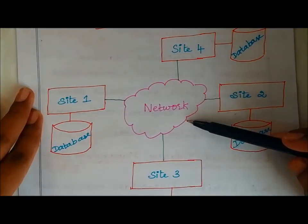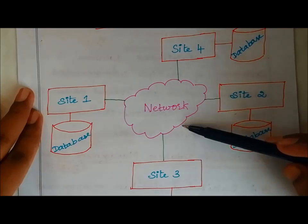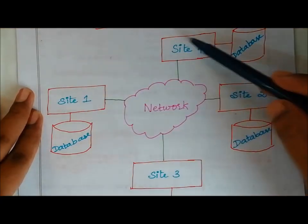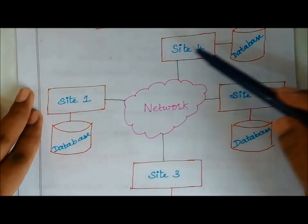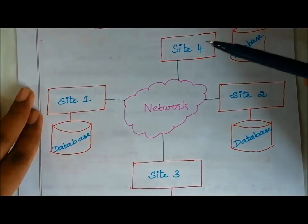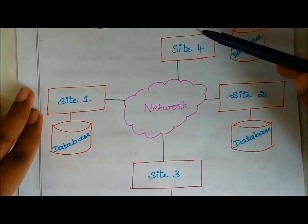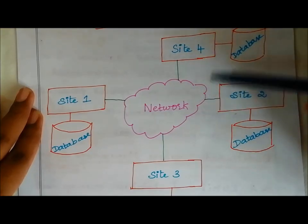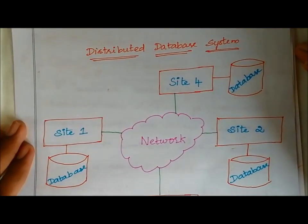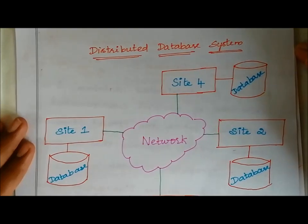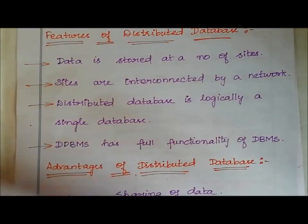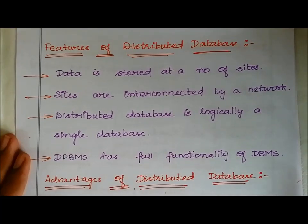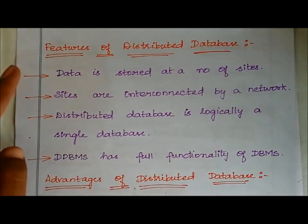All these sites are connected by means of an internet network connection. The sites spread over different locations with computers connected via a network. This is the architecture diagram of the distributed database system.